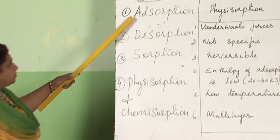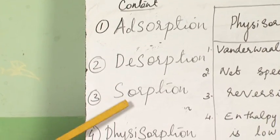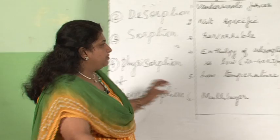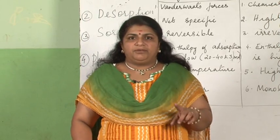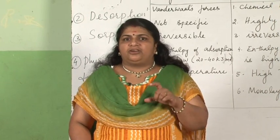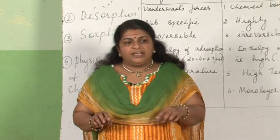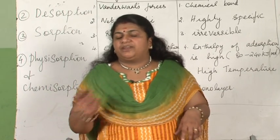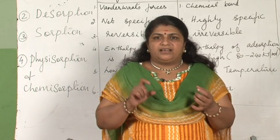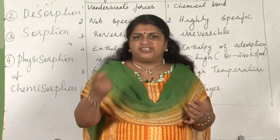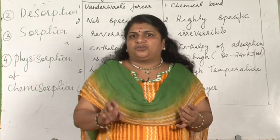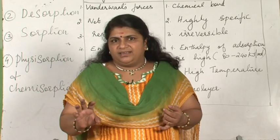The first topic is adsorption, then desorption, then sorption, and then physisorption and chemisorption — the two different types of adsorption. Before coming to adsorption, consider dipping chalk in ink. On the surface of the chalk there will be a lot of ink particles. After breaking the chalk we can see that inside there is also a lot of ink present — meaning absorption on the surface as well as in the interior has taken place. That process is called sorption, where molecular species are concentrated on the surface as well as the interior.